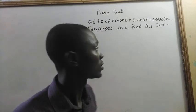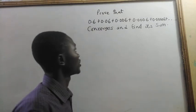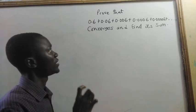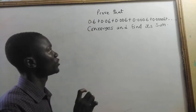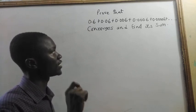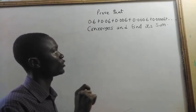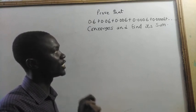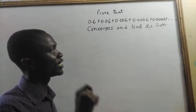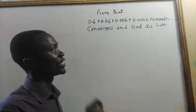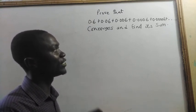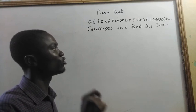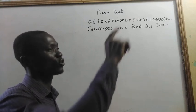Now, in this lesson, we are going to prove that 0.6 plus 0.06 plus 0.006 plus 0.0006 plus 0.00006 plus dot dot dot, continuing to infinity.